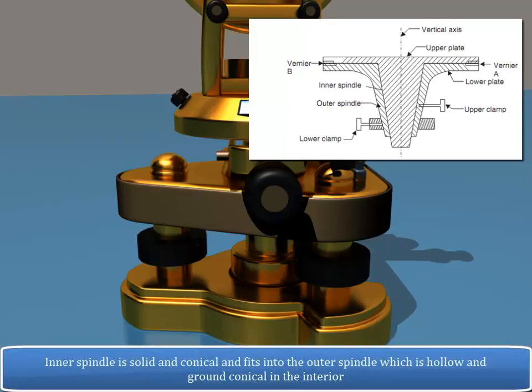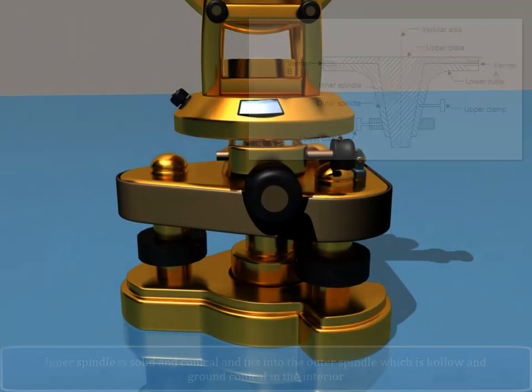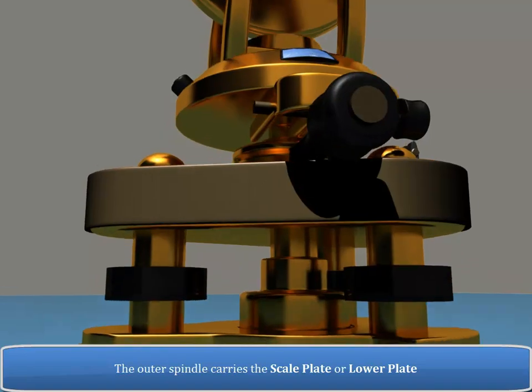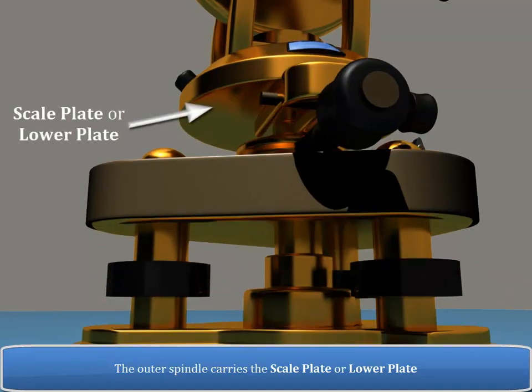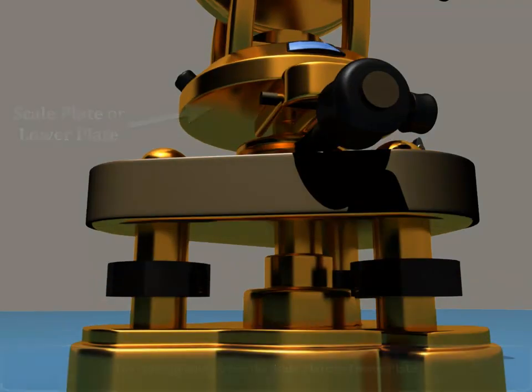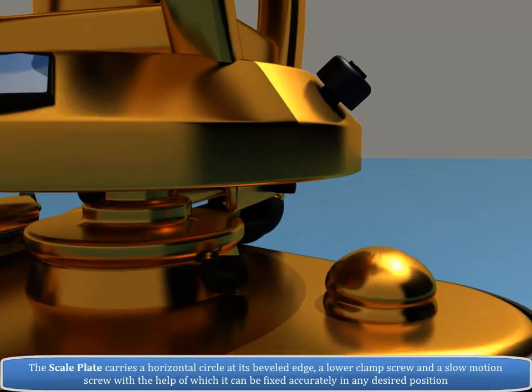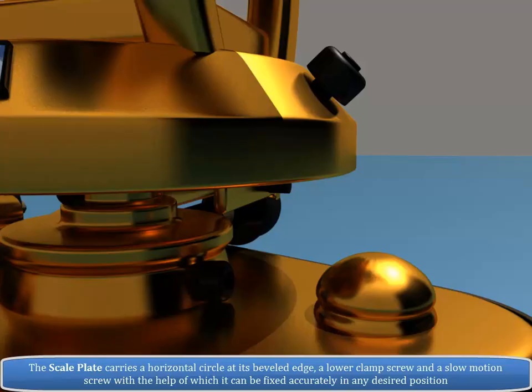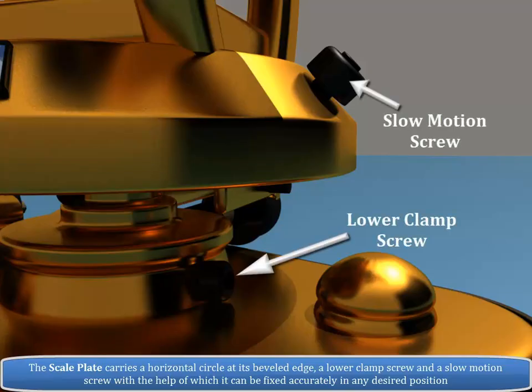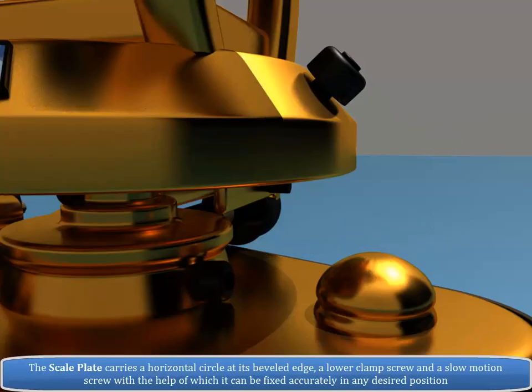Inner spindle is solid and conical and fits into the outer spindle which is hollow and ground conical in the interior. The outer spindle carries the scale plate or lower plate. The scale plate carries a horizontal circle at its beveled edge, a lower clamp screw and a slow-motion screw with the help of which it can be fixed accurately in any desired position.